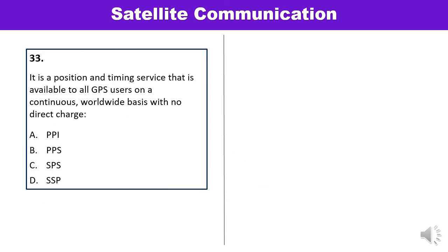Question 33: It is a position and timing service available to all GPS users on a continuous worldwide basis with no direct charge. What is that service? Options are PPI, PPS, SPS, and SSP. It is the SPS (Standard Positioning Service). Correct.